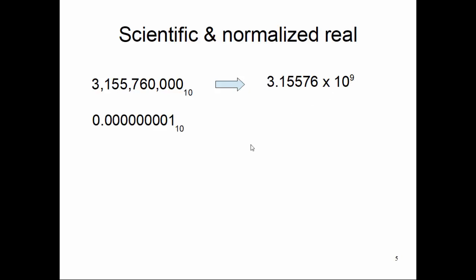Similarly, a very small number can be represented as 1.0 × 10^−9. When the power of ten is negative, we shift the decimal point towards the left. In this case, we shift nine places to the left to get the original value we are trying to represent.